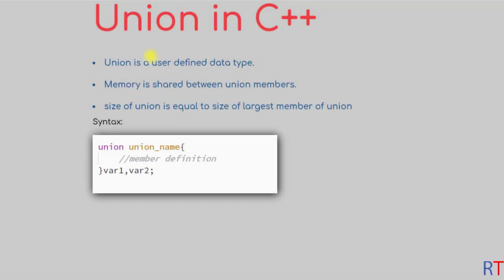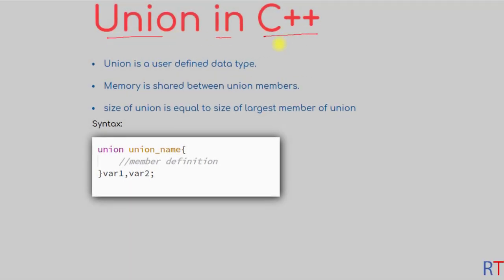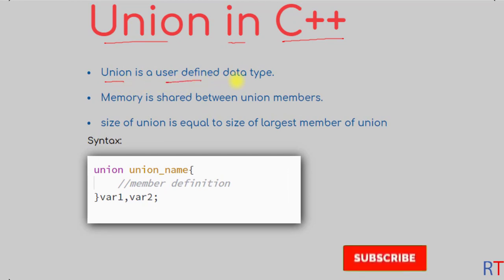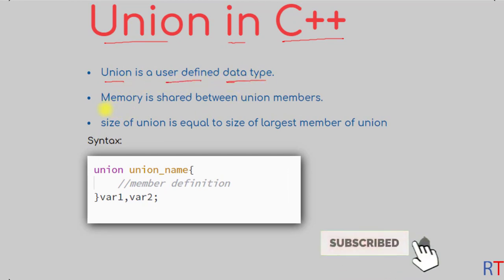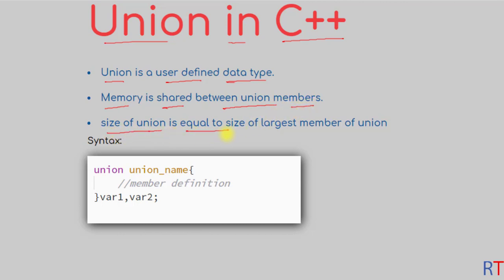In this video we're going to talk about union in C++ programming. Union is a user-defined data type where memory is shared between members of the union. The size of the union is equal to the size of the largest member. The syntax starts with the union keyword, then the name of the union, and then inside the curly braces we declare the members of that union.